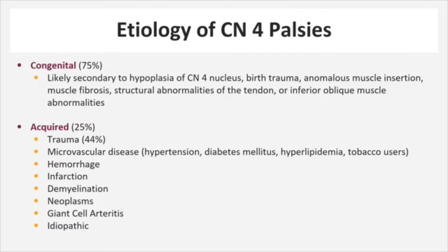The majority of cranial nerve 4 palsies are congenital. At this point in time, we can't pinpoint exactly what causes these congenital palsies. However, some suspect that they occur secondary to hypoplasia of the nerve's nucleus, birth trauma, anomalous muscle insertion, muscle fibrosis, or structural abnormalities of muscle tendons or the inferior oblique muscle itself.